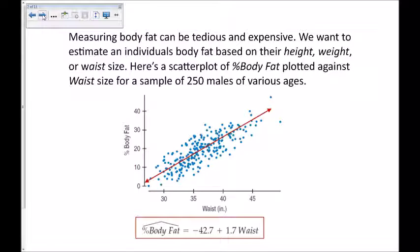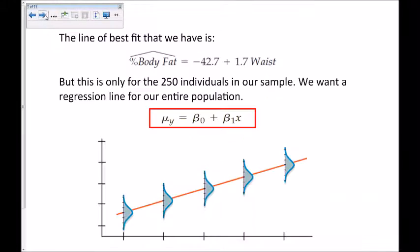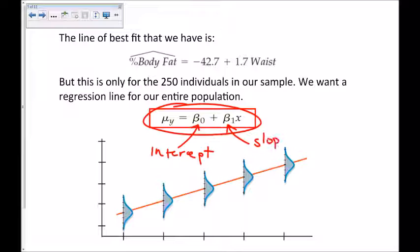The problem is that this line of best fit is based entirely on this sample of 250 males of various ages. What we want to have is the line of best fit for the entire population. So the line of best fit for the entire population will look something like this, where beta sub zero is the y-intercept for the line of best fit for the population, and beta sub one is the slope for the line of best fit for the population.